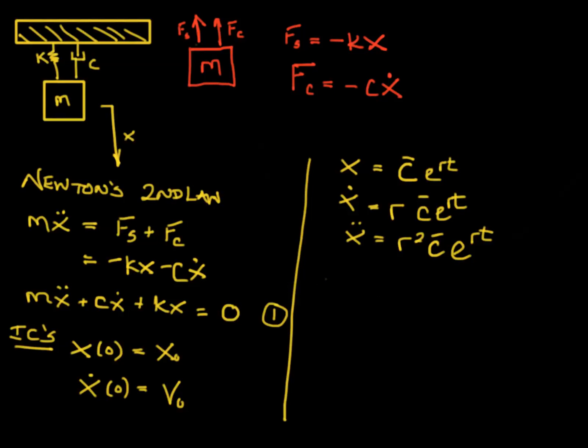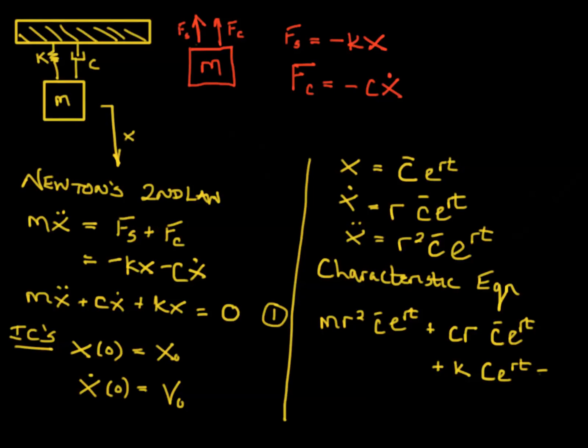Substituting this into equation 1 gives us our characteristic equation. M R squared C bar E to the R T plus C R C bar E to the R T plus K C bar E to the R T is equal to zero.